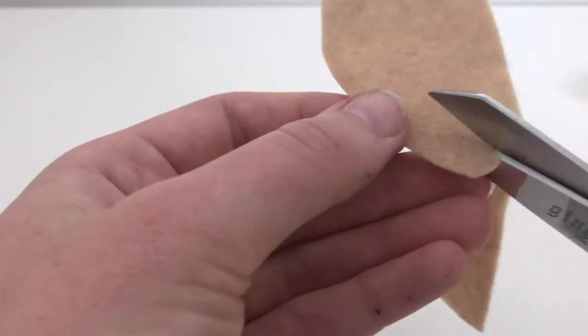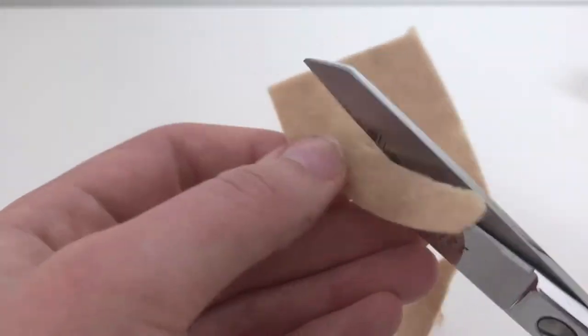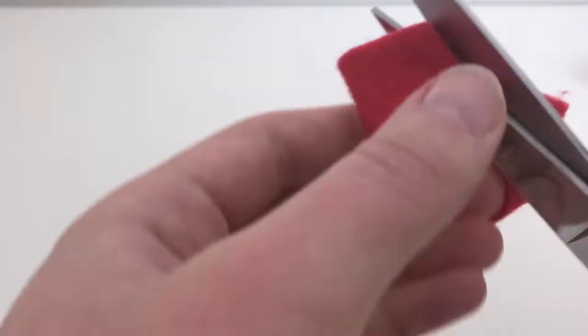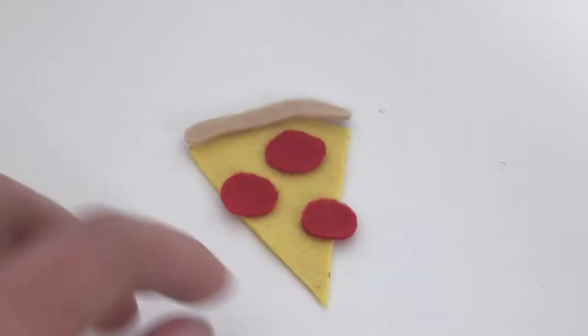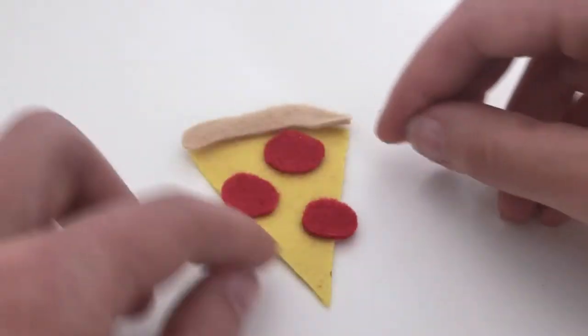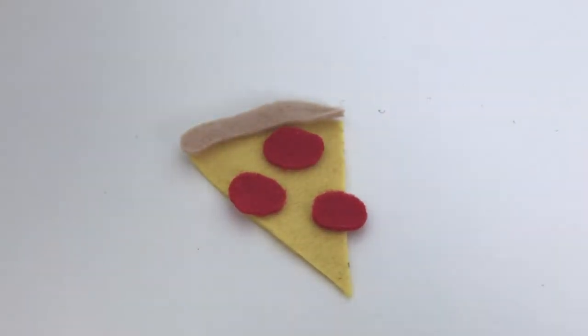Next, take a piece of brown felt and cut the crust shape. Fold the red felt into three and cut out circles. These will be your pepperoni slices. Check your arrangement to make sure that everything looks right.